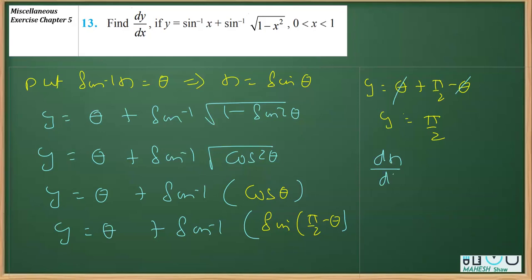So dy by dx, you have to get dy by dx, so dy by dx is equal to, this is a constant and for a constant the differentiation is 0, so this will be our answer.